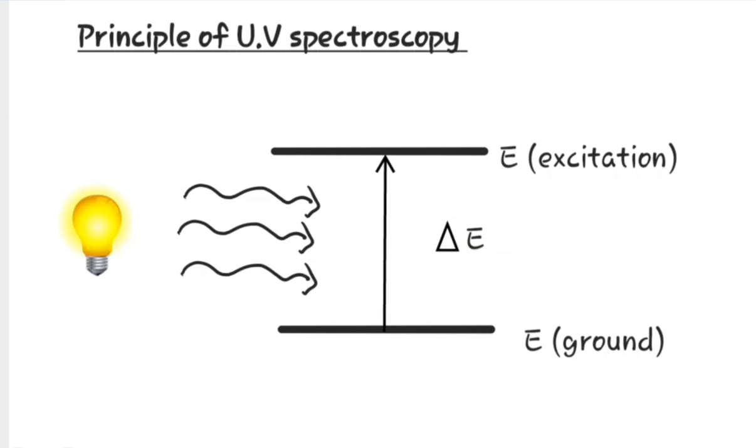Now let us study about the principle of UV Spectroscopy. First of all, UV Spectroscopy is absorption spectroscopy. It is based upon the phenomenon of electronic excitation.